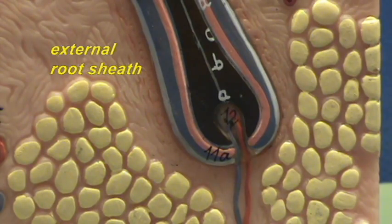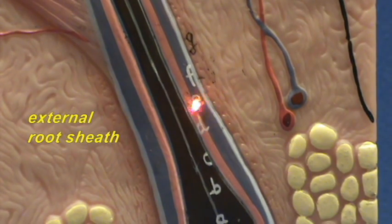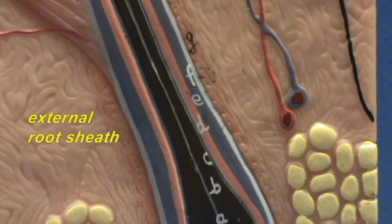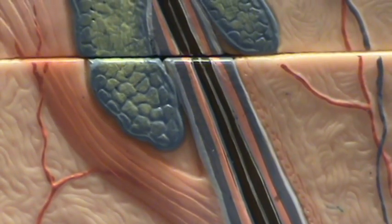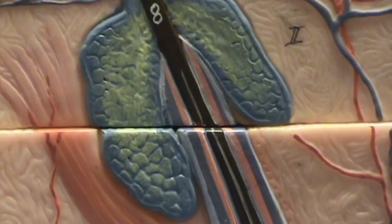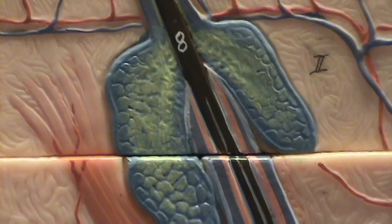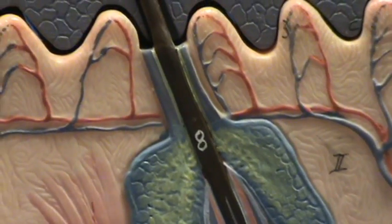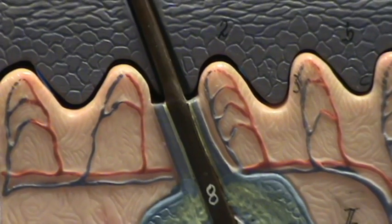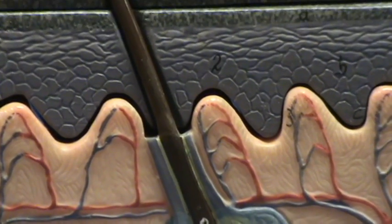The external root sheath is indicated by this little E. And we can follow this upward. You'll notice that unlike the internal root sheath which disintegrates and disappears at this point, the external root sheath continues towards the epidermis.